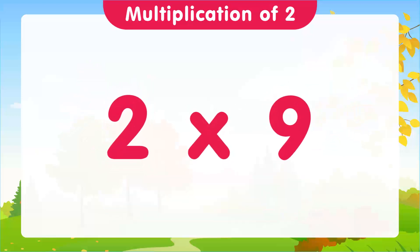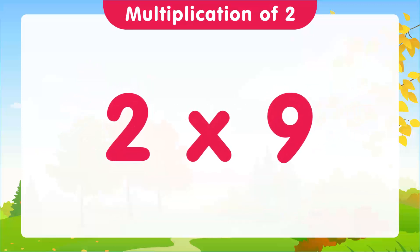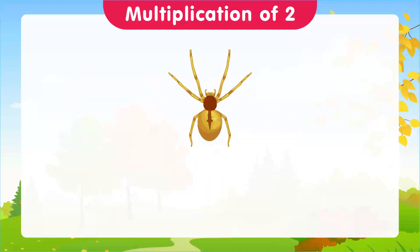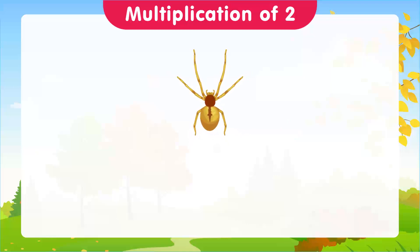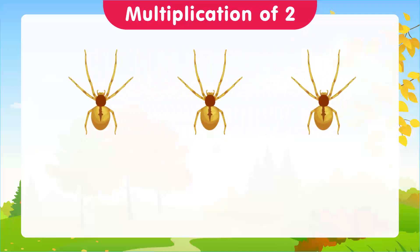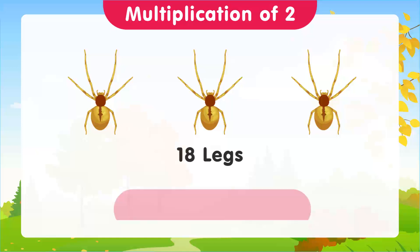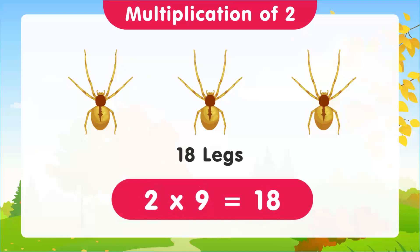And for 2 times 9, let's use spiders. Imagine we have 3 spiders. How many legs do they have between them? 18 legs. And that's our ninth multiplication: 2 times 9 is equal to 18.